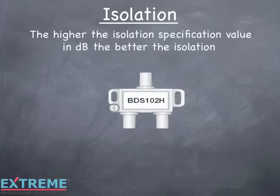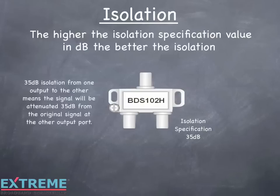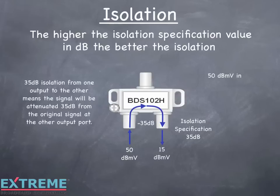The higher the isolation specification value in dB, the better the isolation. Here we're showing a two-way splitter with an isolation specification of 35 dB. 35 dB isolation means that the signal will be attenuated 35 dB from the original signal at the other output port. In this example, we're feeding a 50 dBmV signal into one of the output ports. As the signal passes from this port to the other output port, it's attenuated by 35 dB, so the signal on the other output port is now at 15 dBmV — 50 dBmV in, minus 35 dB isolation, for a signal of 15 dBmV out.